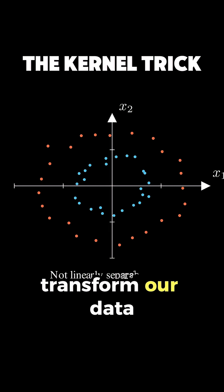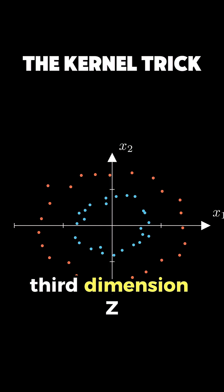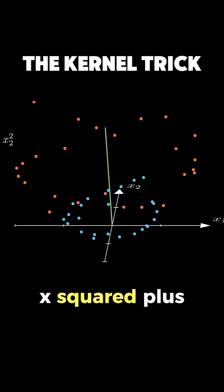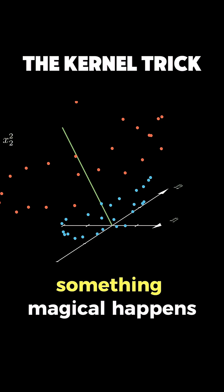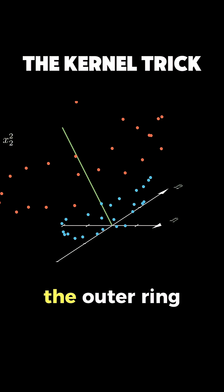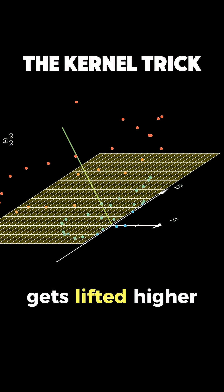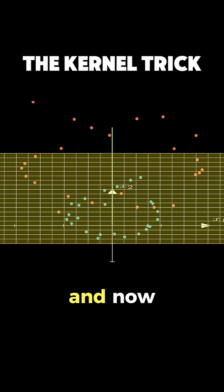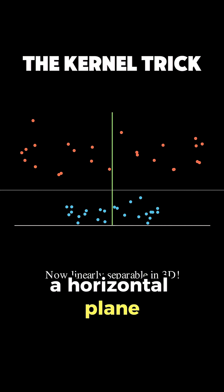But if we transform our data by adding a third dimension z, where z equals x squared plus y squared, something magical happens. The outer ring gets lifted higher than the inner circle and now we can separate the classes with a horizontal plane.